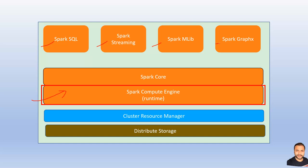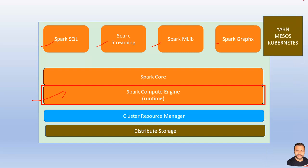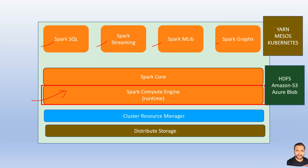Spark doesn't provide its own cluster manager solution, so it plugs in with third-party components like YARN, Mesos, or Kubernetes. At the same time, Spark doesn't provide any storage solution of its own, so it plugs in with Hadoop HDFS, Amazon S3, or Azure Blob. For metadata management, Spark relies on Hive as the metastore solution.